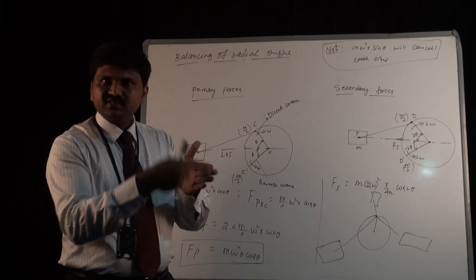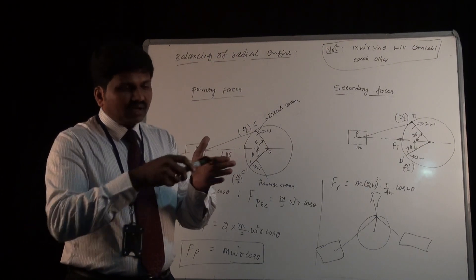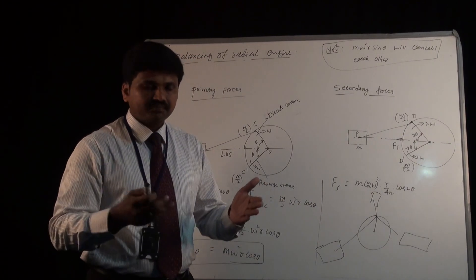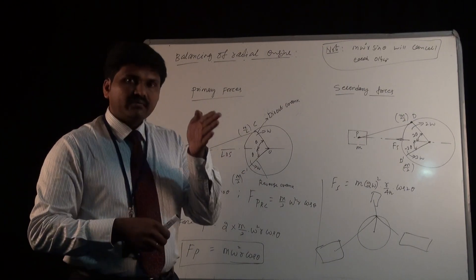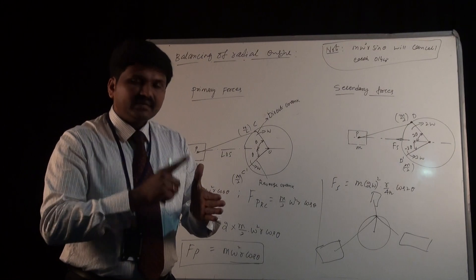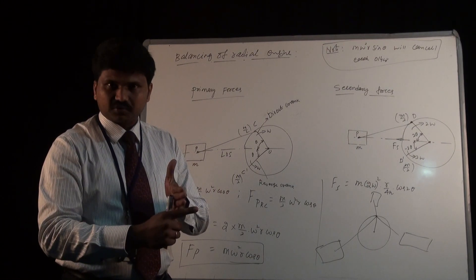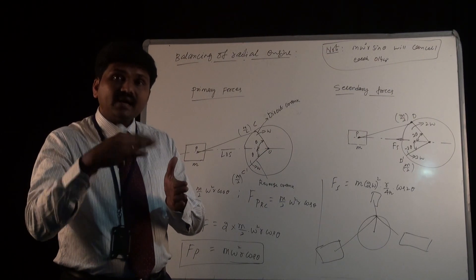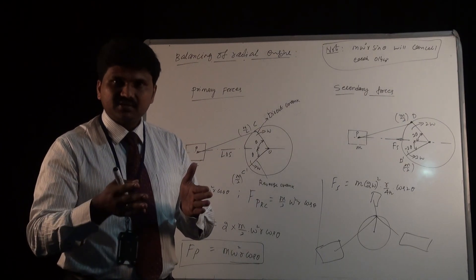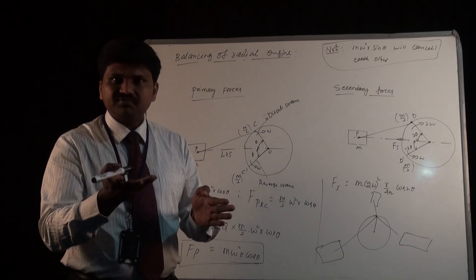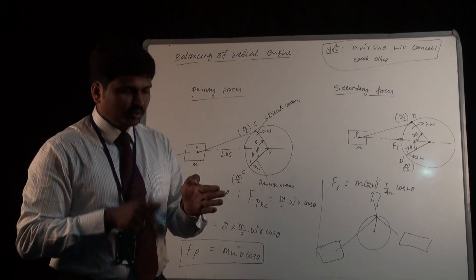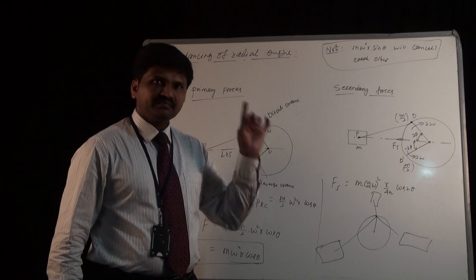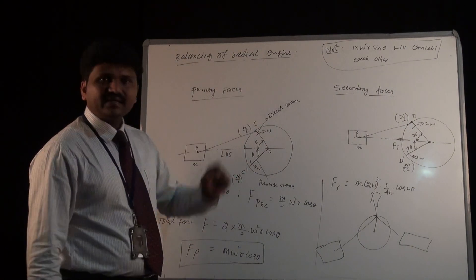Cylinder 1, cylinder 2, cylinder 3 — all three cylinders are placed in one plane. It is not necessarily only three cylinders; it can be more than three. Because all the cylinders are placed in only one plane, you will see only primary unbalanced force and secondary unbalanced force. You will not see primary and secondary couples, because all the forces are acting in one plane — there is no formation of a couple.